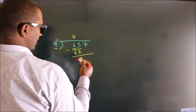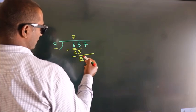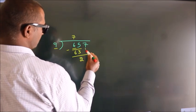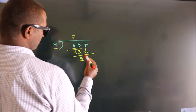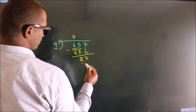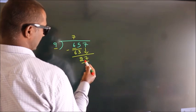After this, bring down the beside number. So 7 comes down, giving us 27.